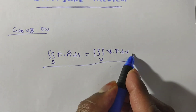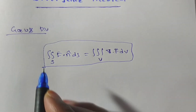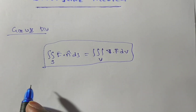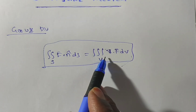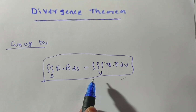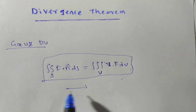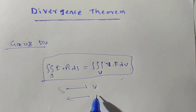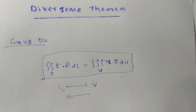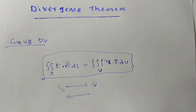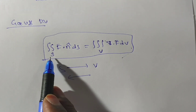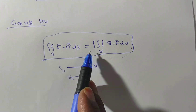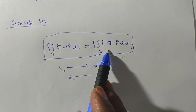Observe: on the left side we have a surface integral, and on the right side we have a volume integral. So the divergence theorem is a relation between surface and volume. The relation between surface integral and volume integral is the Gauss divergence theorem. Now, how to write the statement from this formula.